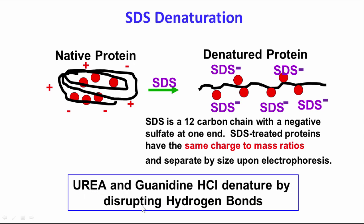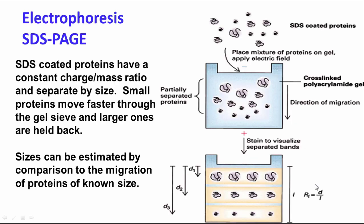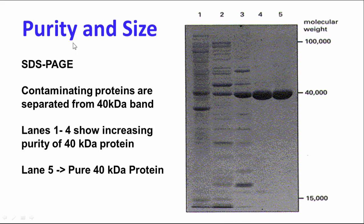In SDS-PAGE electrophoresis, the polyacrylamide gel acts as a sieve. The negatively charged SDS-coated proteins migrate from the negative cathode toward the positive anode. Large ones move more slowly because they sieve through the gel more slowly, while small ones migrate faster. You can then stain them to visualize bands and run colored standards to estimate approximate sizes. Here's a purification showing a crude extract, a couple of purification steps, and the final product at 40,000 molecular weight — it looks pretty pure.